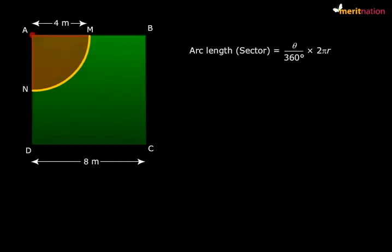So let us use this formula in the question again. Go back to the figure. Theta we know is 90 degrees. So the length of arc MN is 90°/360° × 2 × π, that is 22/7, × r, the length of the rope, 4 meters. You simplify this expression and you get your answer as 44/7 meters.